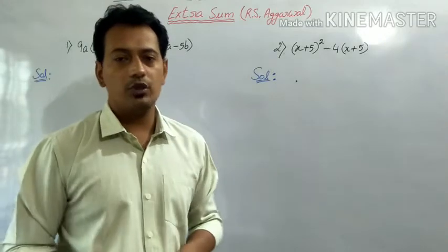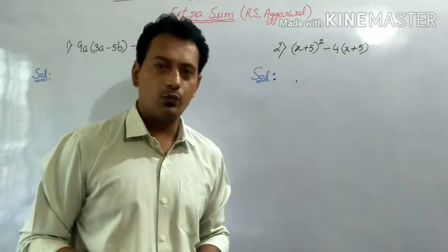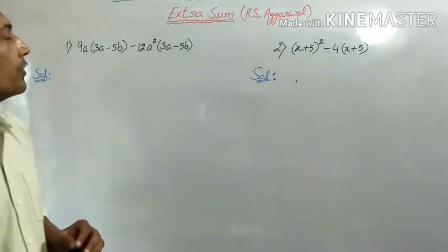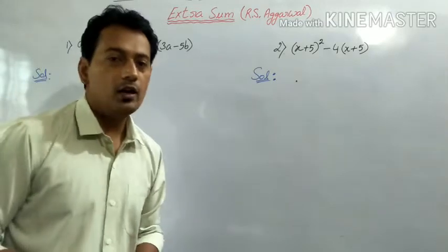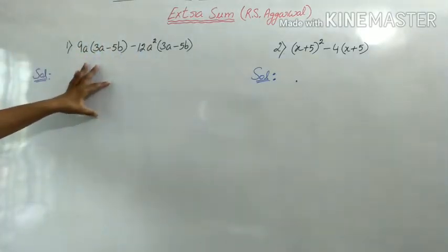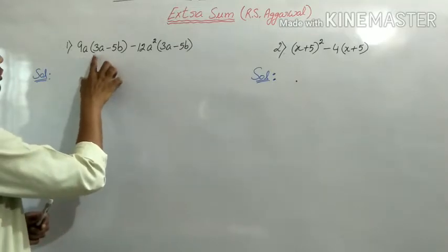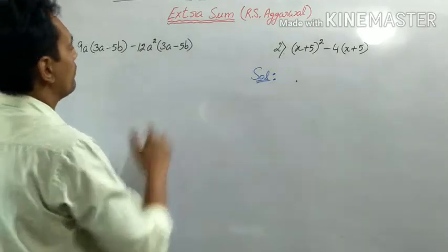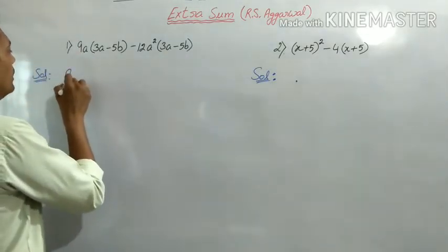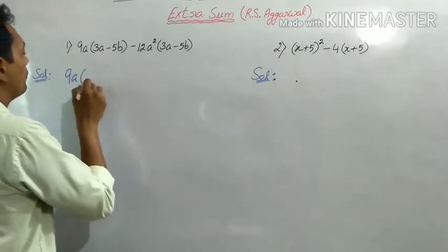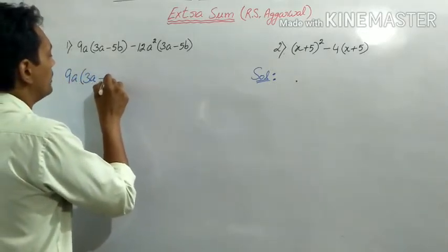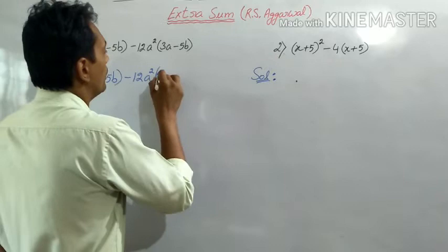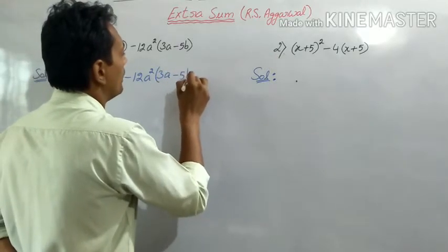हमने exercise के सारे sums कर लिए हैं — factorization के last exercise 14.4 हमने finish किया। अब students हम कुछ extra sums ले रहे हैं from RS Agarwal, वो practice के लिए है। तो यहाँ पर हम factorization कर रहे हैं। सबसे पहला sum है: 9a into 3a minus 5b minus 12a square into 3a minus 5b.